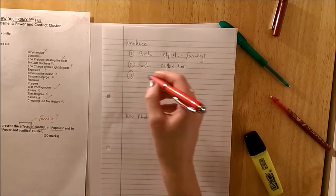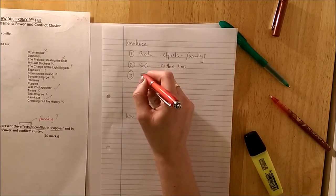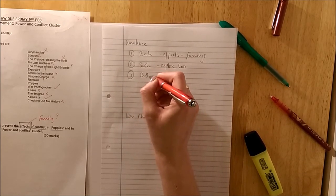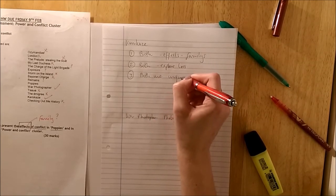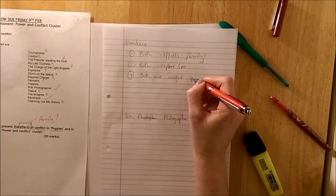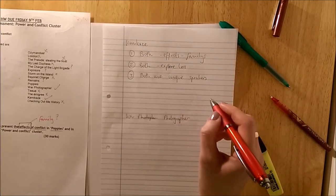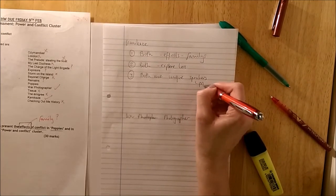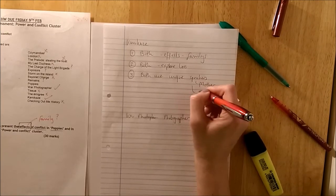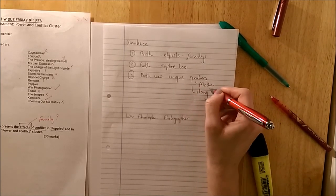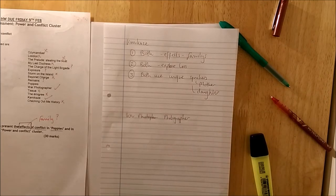And I think that my third point would be something about the perspectives. So that both use unique perspectives, speakers, voices in their poems. So you've got the mother in Poppies. You've got mainly the daughter but also others in Kamikaze.